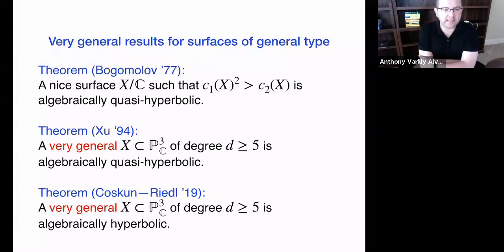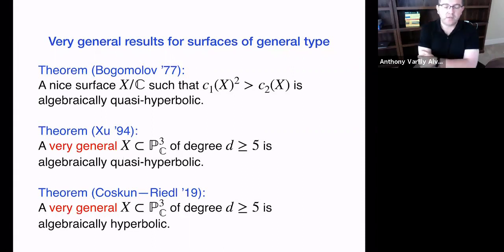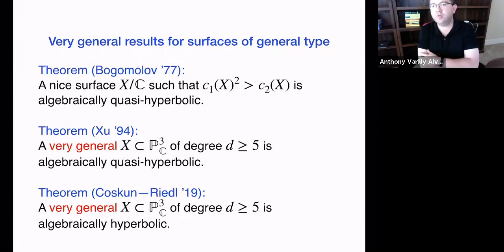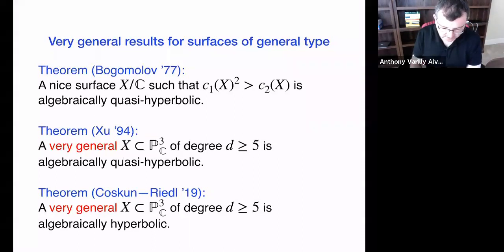These are strong results, but as highlighted, the word 'very general' is a problem for us because we have very specific surfaces we want to test. The arguments tend to require surfaces whose Picard group is generated by the hyperplane class, which is not the case for our surfaces. We can't take these results off the shelf. We need something different to take a concrete specific surface and prove it is algebraically quasi-hyperbolic.